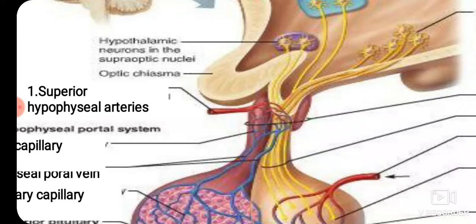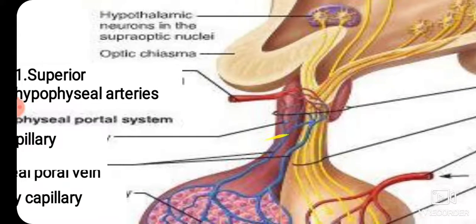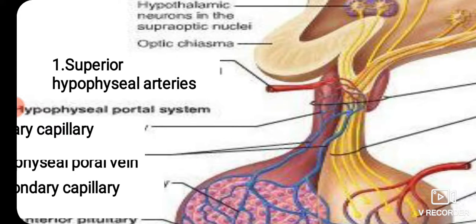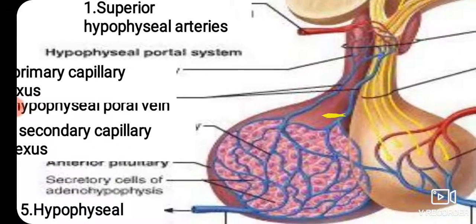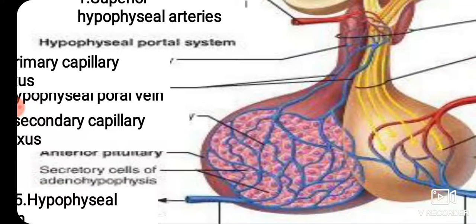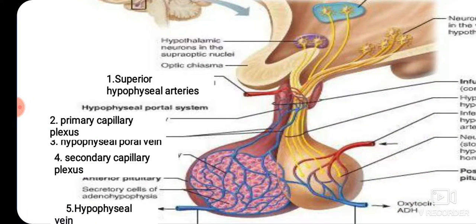The secondary capillary plexus is formed by the hypophyseal portal vein dividing into a capillary network. This plexus then joins to form the hypophyseal vein, which drains blood from the anterior pituitary. So the superior hypophyseal artery forms the primary plexus, the hypophyseal portal veins carry blood to the anterior pituitary, and the secondary plexus drains into the hypophyseal vein.